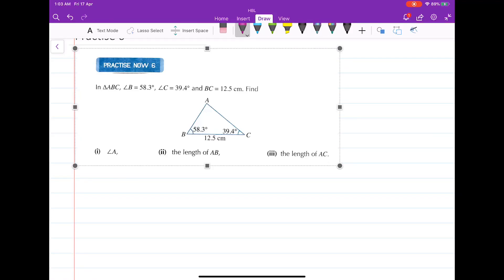So let's consider this question here, practice now 6. Given a triangle ABC, angle B is given as this, angle C this, and BC is 12.5.